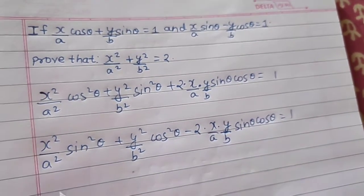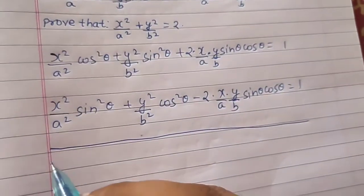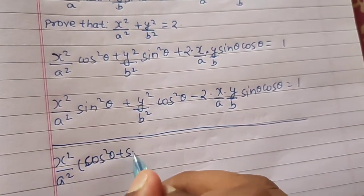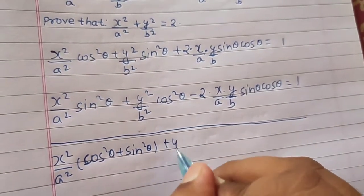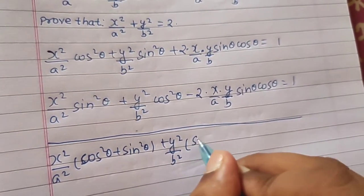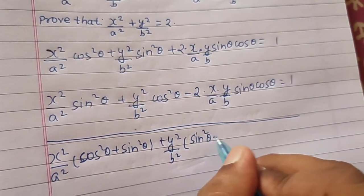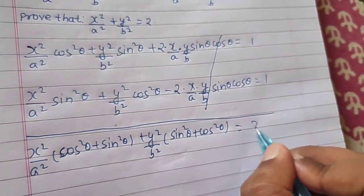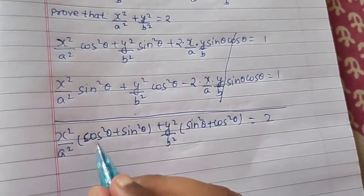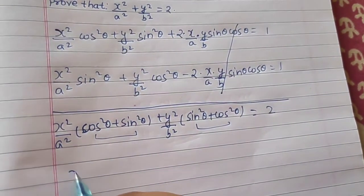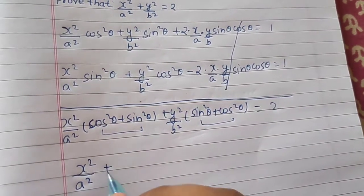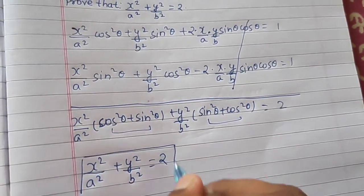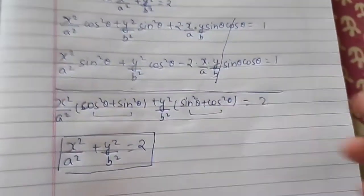Adding both equations, we get x²/a²·(cos²θ + sin²θ) + y²/b²·(sin²θ + cos²θ) = 1 + 1 = 2. The cross terms cancel. Since cos²θ + sin²θ = 1 in each case, we are left with x²/a² + y²/b² = 2, which is exactly what we wanted to prove.